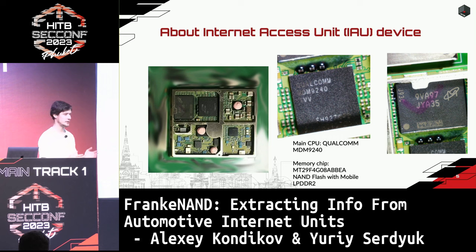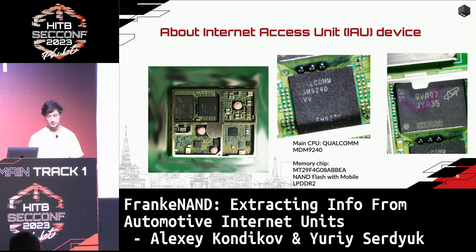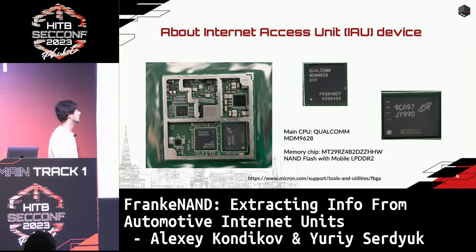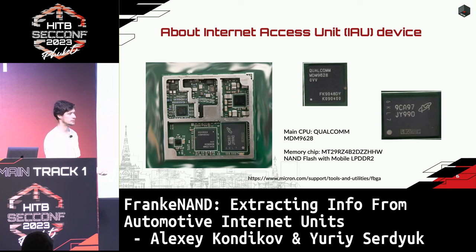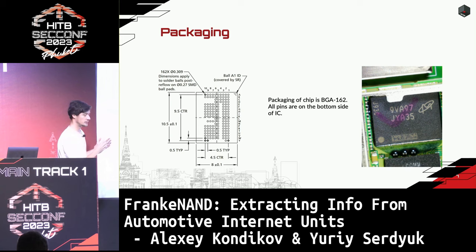If you enter this marking — this is called an JEDEC code — into the Micron website, you will get all the information including data sheets about your memory chips. The packaging of this chip is 162BGA, which is the same packaging as many eMMC memory chips, but it is not eMMC.